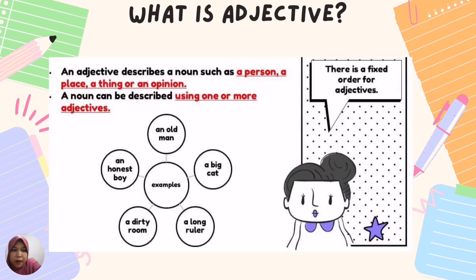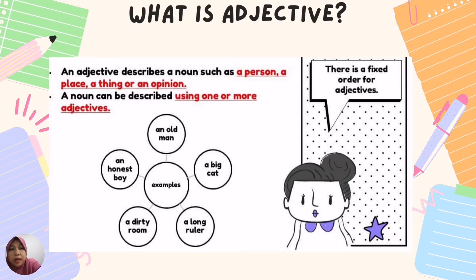First of all, let's look at what adjectives are. An adjective describes a noun — such as a person, a place, a thing, or an opinion. A noun can be described using one or more adjectives. For example: an old man — 'old' describes 'man'; a big cat — 'big' describes 'cat'; a long ruler; a dirty room; and an honest boy.